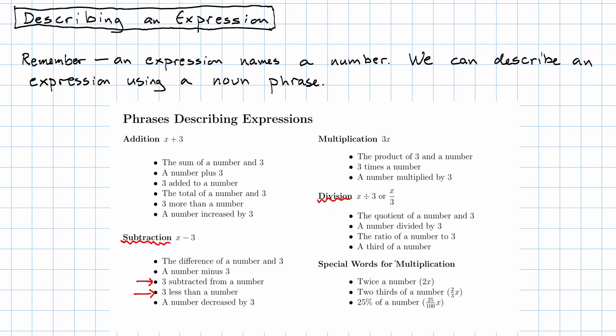Also be aware that we can describe division by talking about a fraction. Technically speaking, a third of a number is using the same kind of language as we are down here. When I say a third of a number, I technically mean one third times x. But of course, that's the same as x divided by three. To see that, just write the x over one. So, be aware of order mattering in subtraction and division. Be aware of the fact that we can use that fraction language to talk about division sometimes.